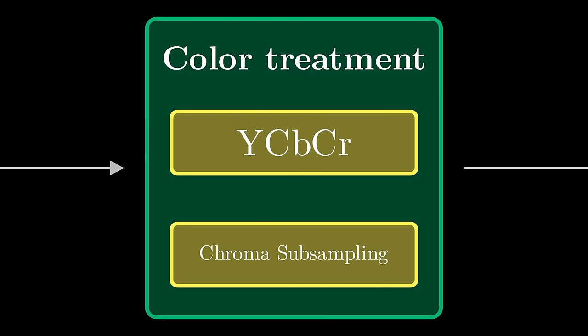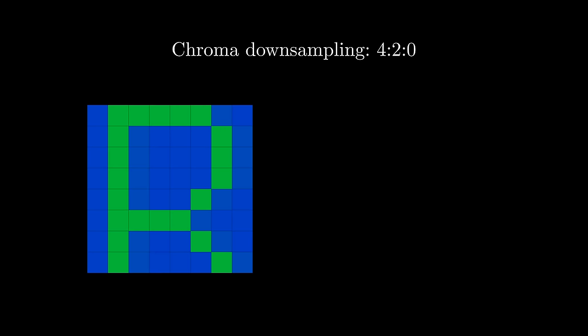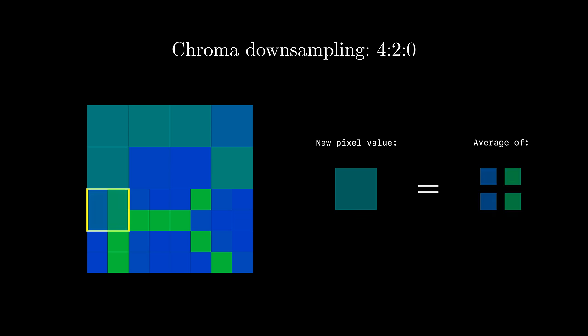As a result of being more sensitive to brightness than colors, one idea to compress our original image involves sampling less of the Cb and Cr components and keeping all of the luma components. The technique is referred to as chroma downsampling or chroma subsampling. For a 4:2:0 chroma downsampling scheme, we go through our original 8x8 image in 2x2 blocks and simply average the group of pixels to get a shared value for the 4 pixels in the original image.